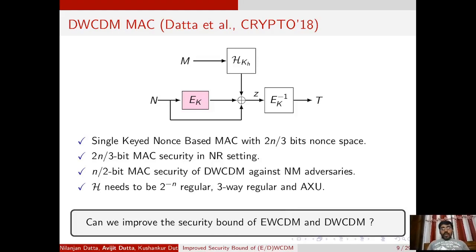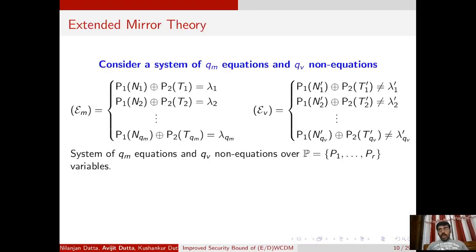In this paper, we ask: can we improve the security bound of EWCDM and DWCDM? Because, as we have seen, these two constructions are secure only up to about 2n/3 bits in the nonce-respecting setting. Therefore, we study whether it is possible to improve the security bound of these two constructions. To analyze and obtain the improved security bound, we first discuss the extended mirror theory technique.